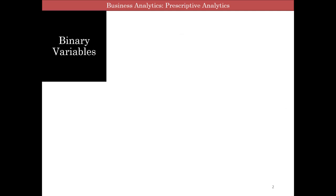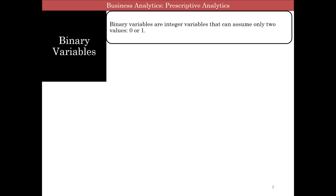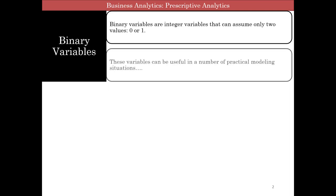So let's look at binary variables. Binary variables are variables that can assume only zero or one values. These variables can be useful in a number of practical modeling situations, and we're going to talk about one specific problem here.